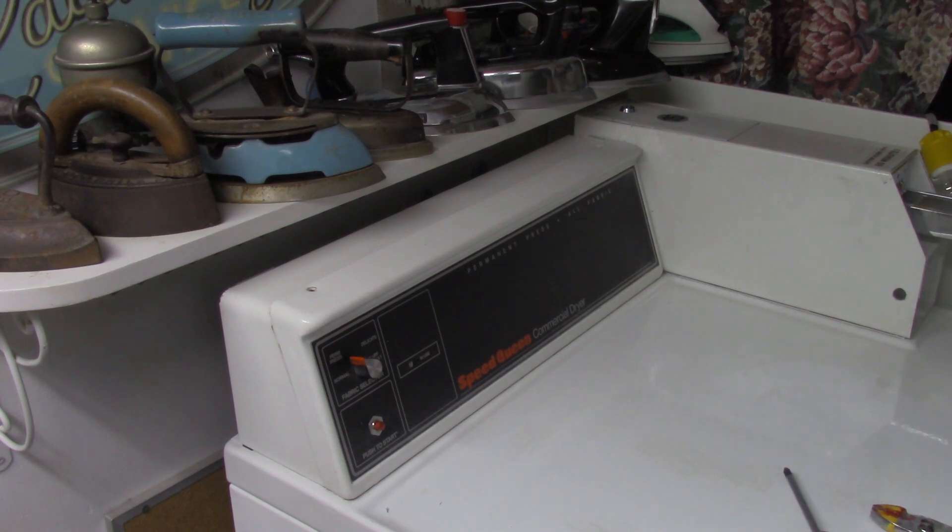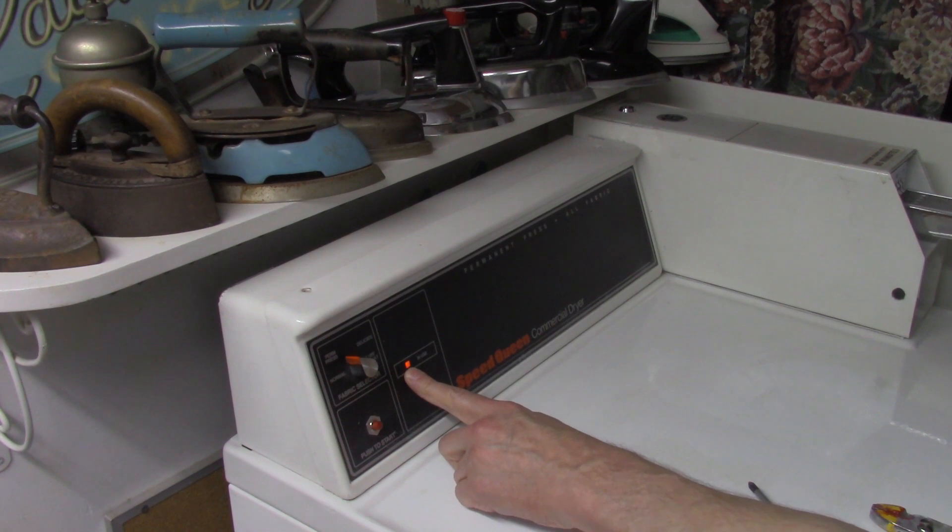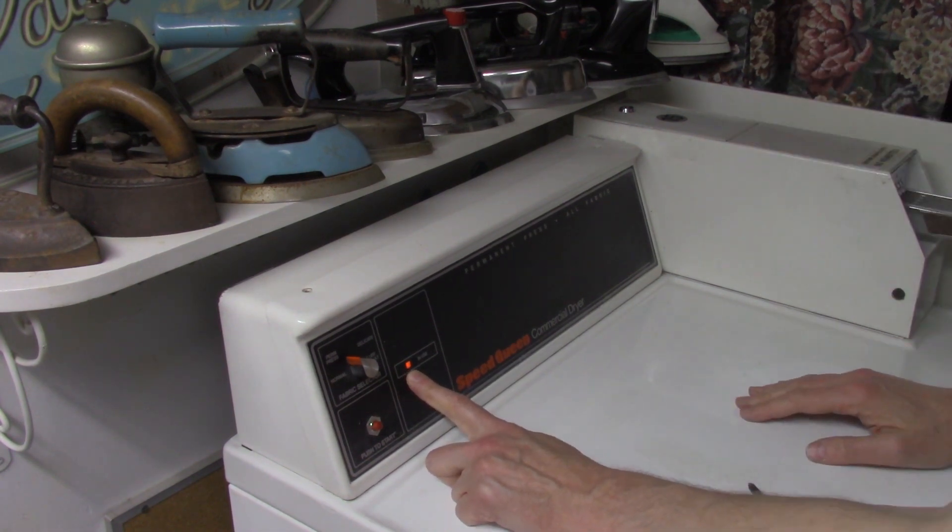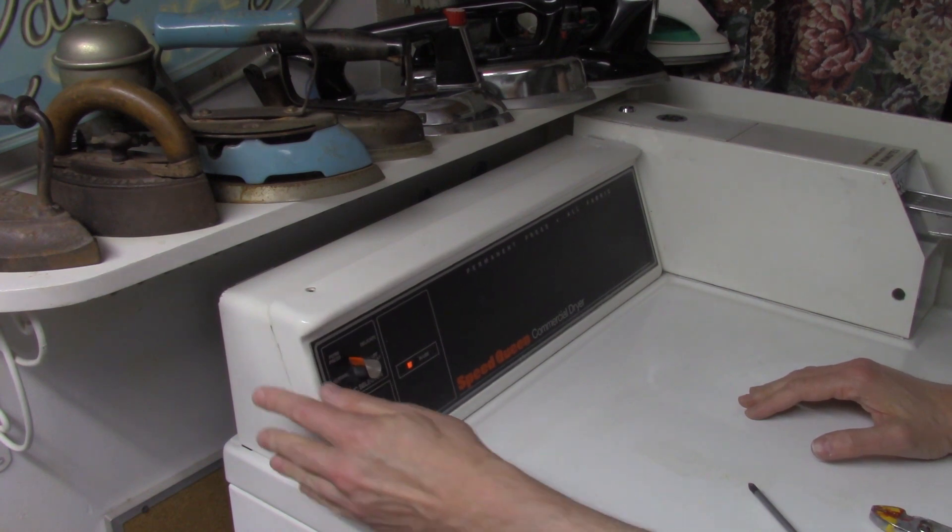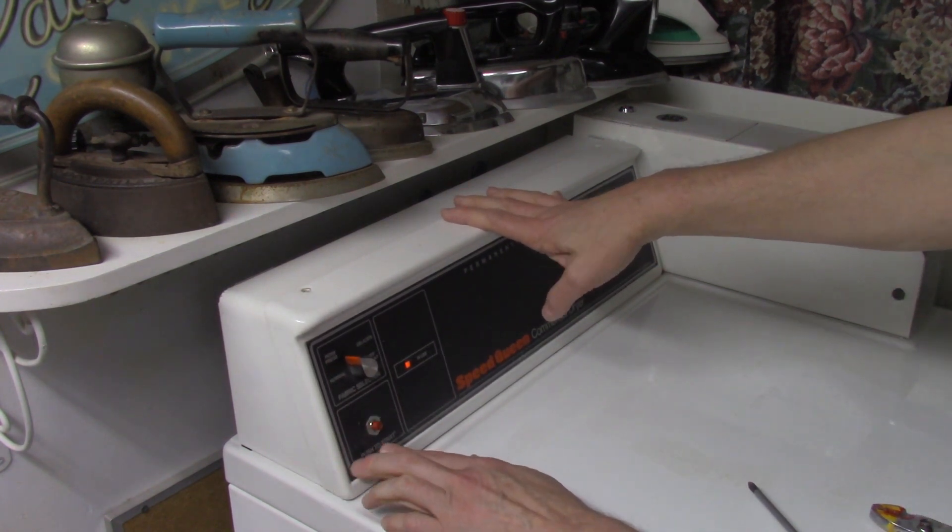Before you go through the trouble of putting the screws back in, you might want to test it. Power has been put back on. You can see the in-use light is on when the power is put on and the coin slide has been activated, starting up the timer. When this button is pressed, it should start.